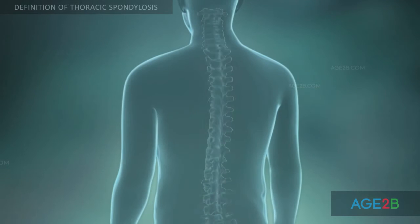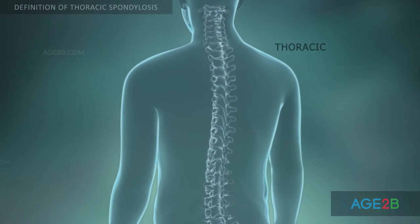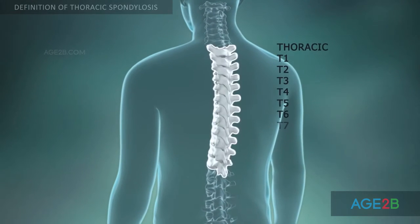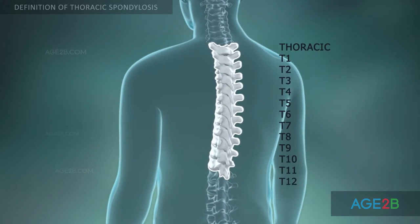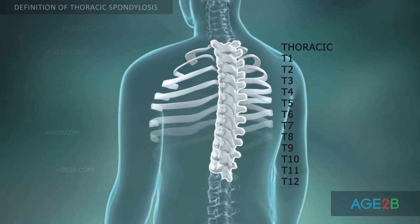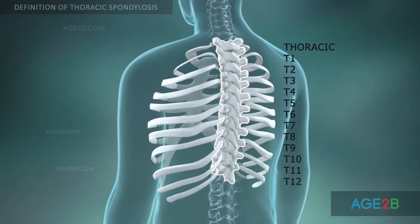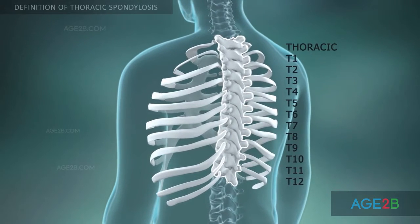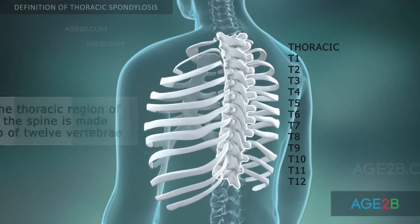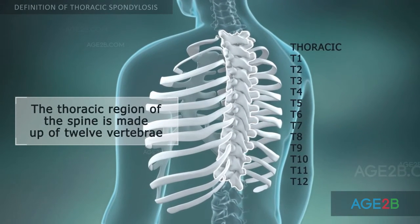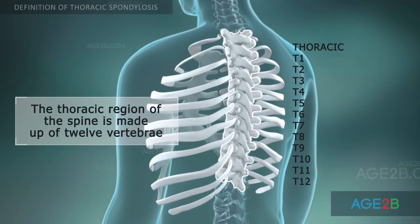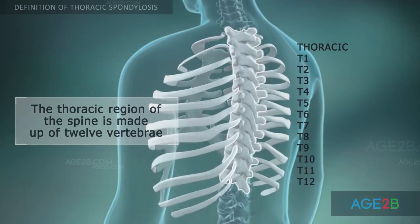The thoracic region of the spine is made up of 12 vertebrae, designated as T1 through T12. The thoracic vertebrae are joined by ribs to form your rib cage.